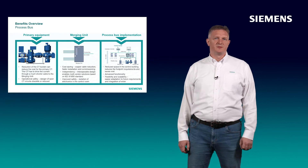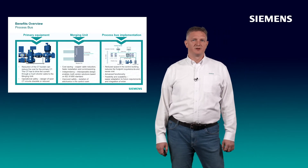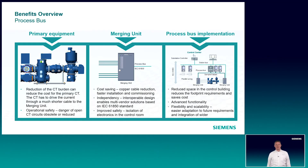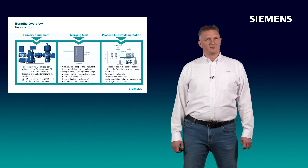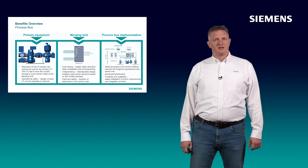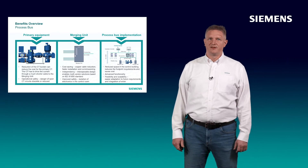Let's have a look at the benefits of using ProcessBuzz. At the primary equipment, reduction of the CT burden reduces the cost for the primary CT. The CT drives the current through a much shorter cable to the merging unit, which means a CT with lower burden can be used. Operational safety is important: the danger of open CT circuits is reduced because the CT connection is outsourced to the primary equipment rather than within the protection cubicles. With LPIT, this risk is obsolete by nature, as there is no risk of harmful voltages due to the low signal level. You can save further costs by reduction of copper cables, fast installation and commissioning, and increase independency by interoperable design, which enables multi-vendor solutions based on the IEC 61850 standard.